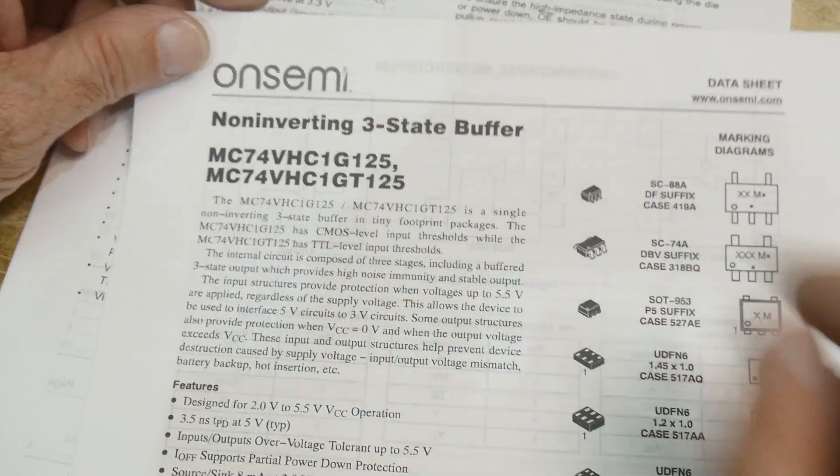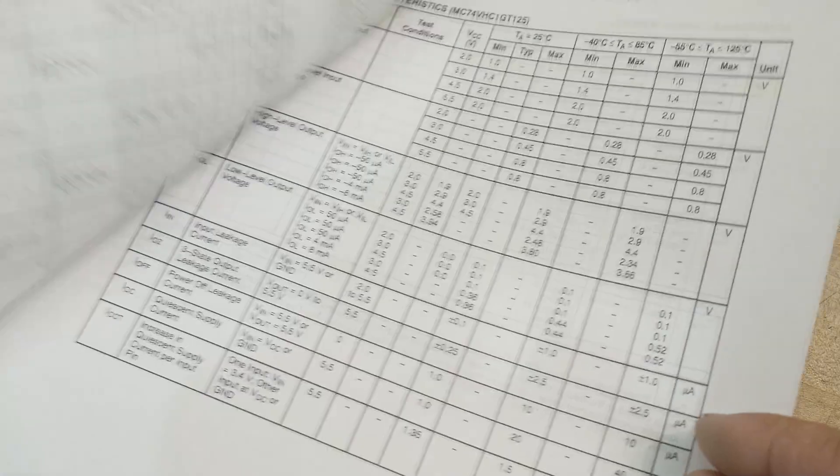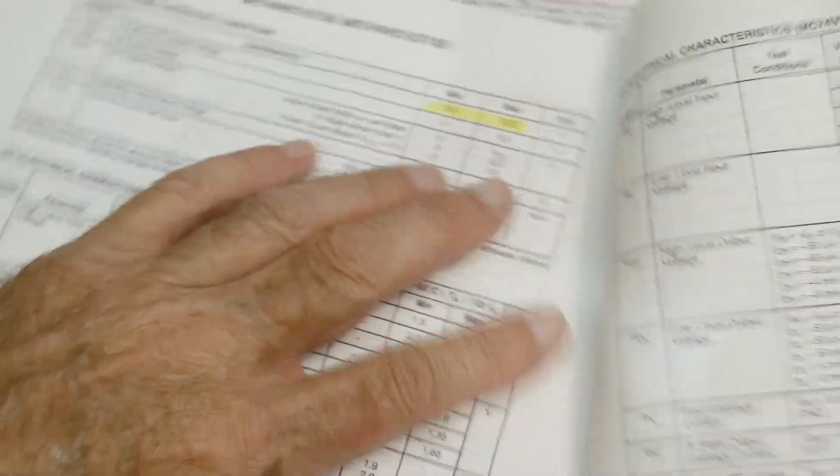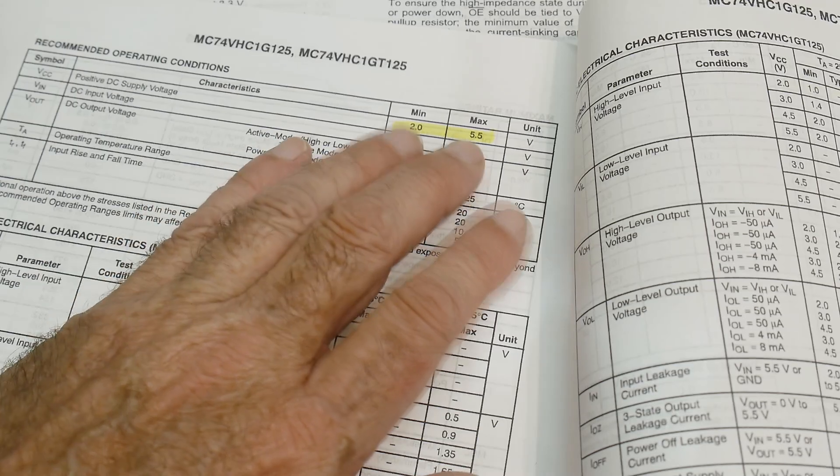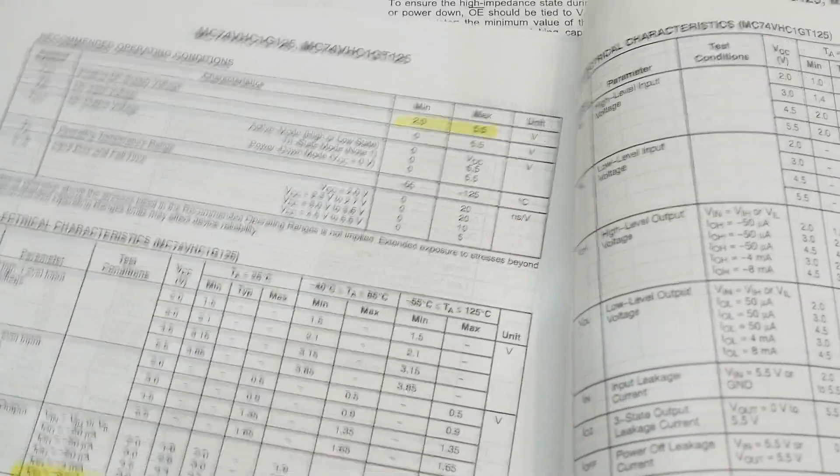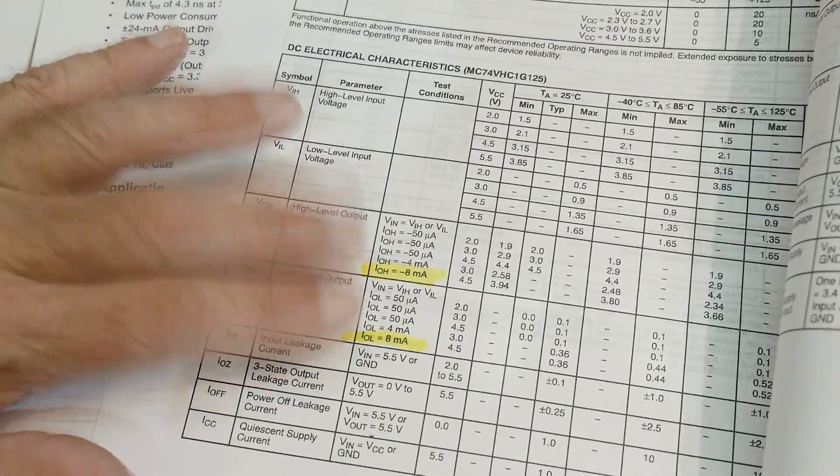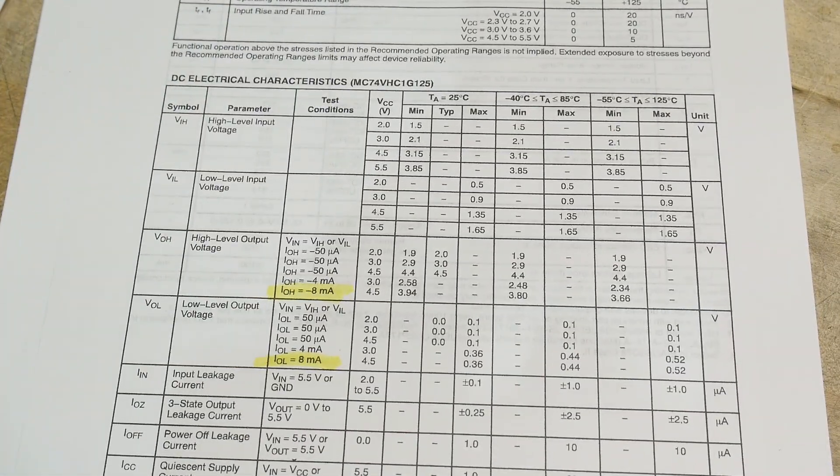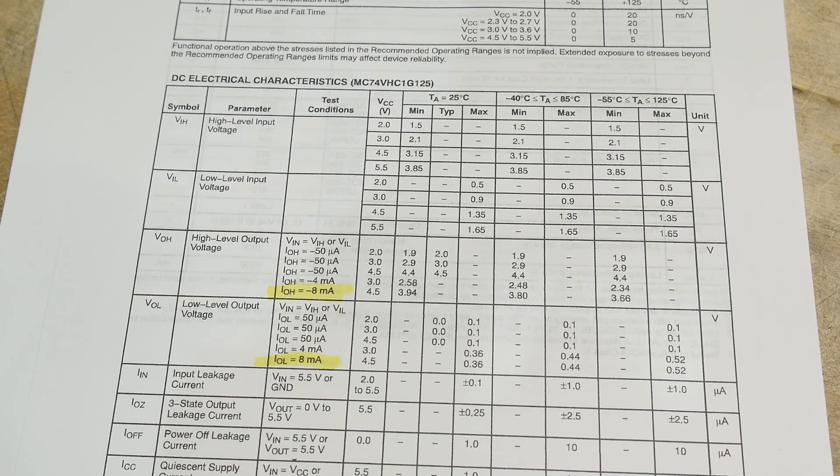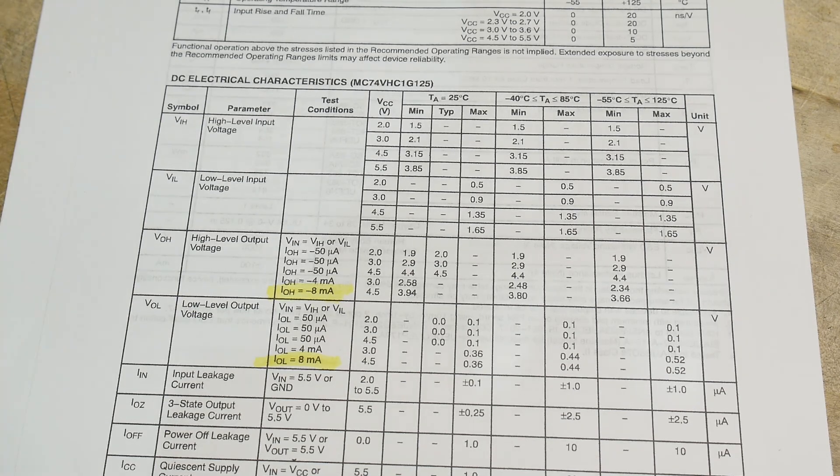Let's take a look at another one. Here is a VHC. He has a much wider VCC range, he can go from two volts to five and a half. That is good. Also plus or minus eight milliamps.